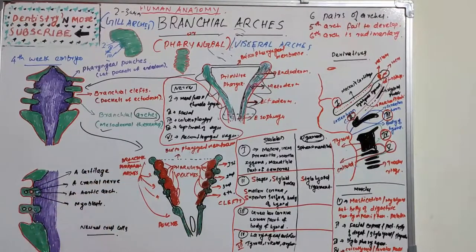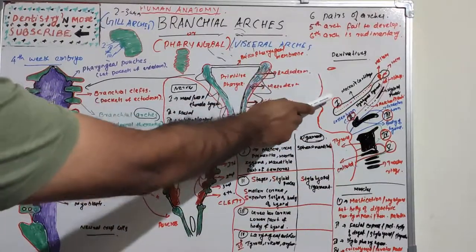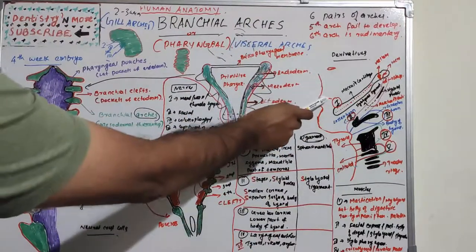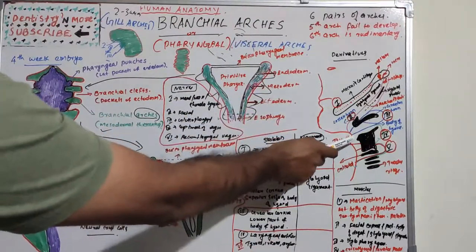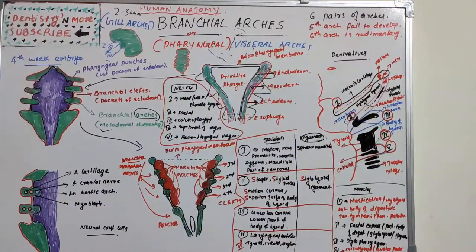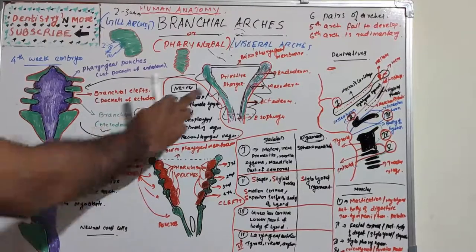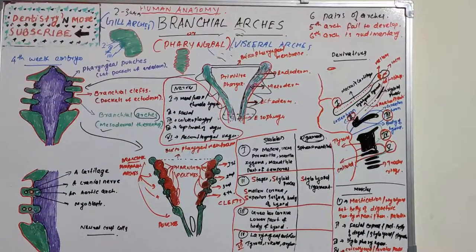These arches later give rise to various structures in the head and neck regions. This is a human face in lateral aspect showing the nose, lips, chin, and neck. The pharyngeal arches ultimately give rise to the mandible, maxilla, hyoid bone, various muscles, arteries, nerves, and ligaments in the head and neck region. Now we move on to the details of each arch.